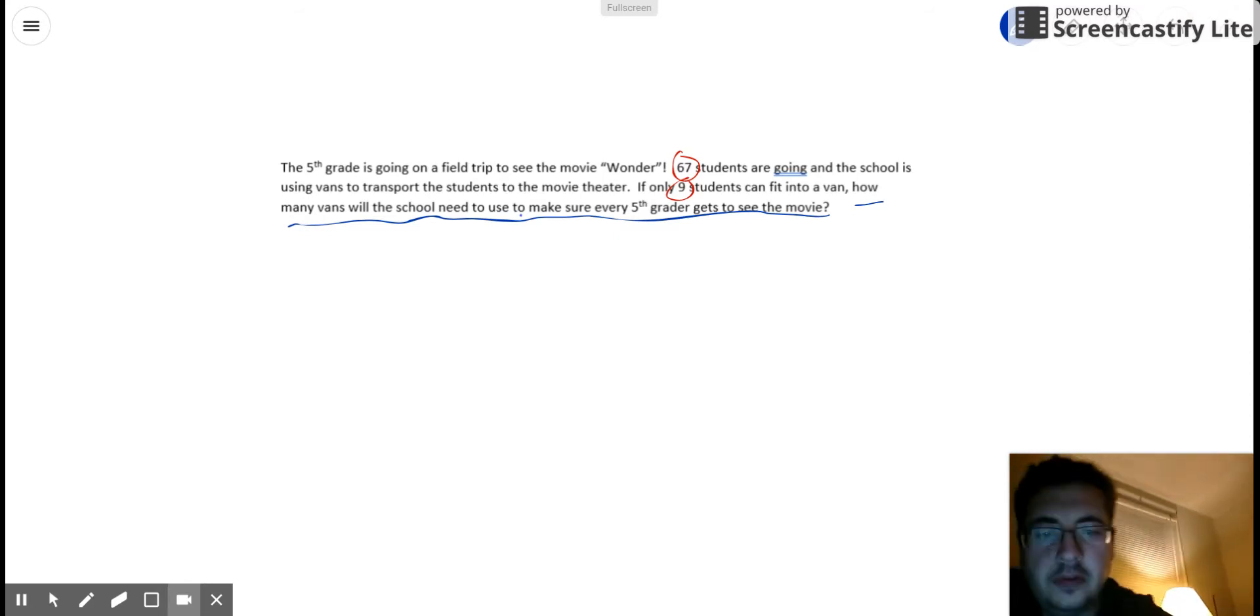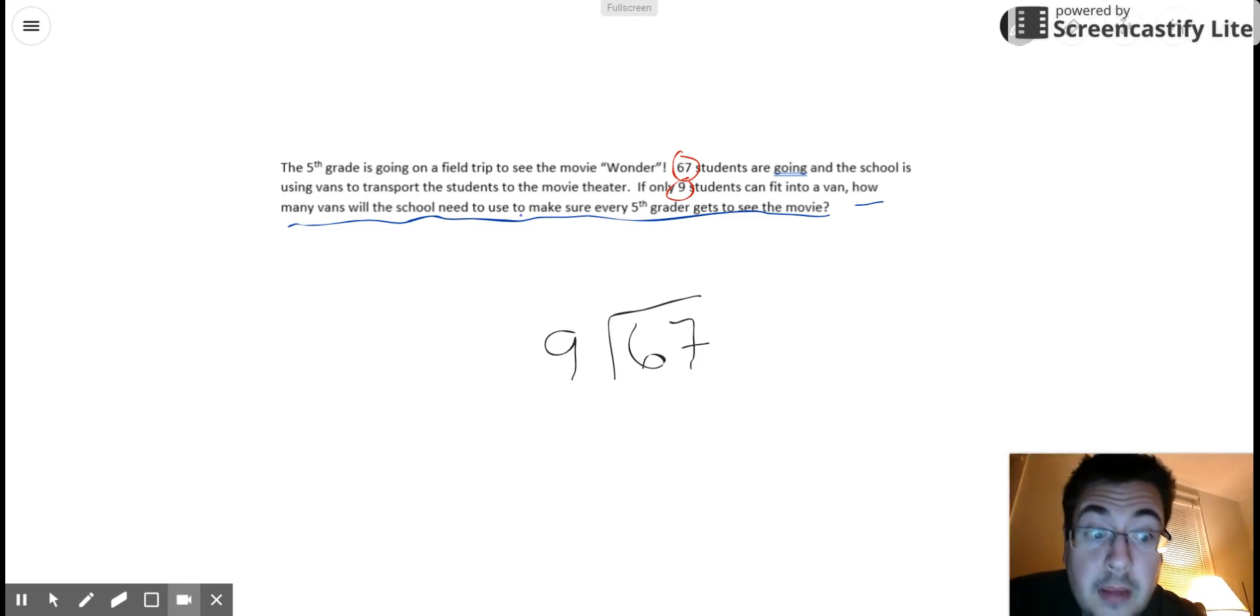So I'm going to set this division problem up, and the total is always going to be your dividend, and your dividend is always going to go inside the house. So I have 67, and I'm going to divide 67 by 9.